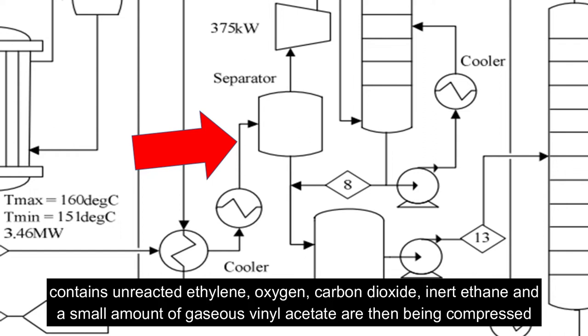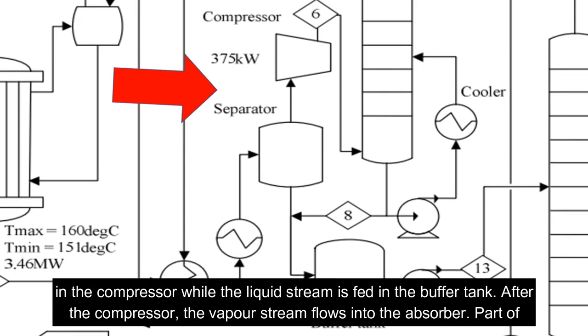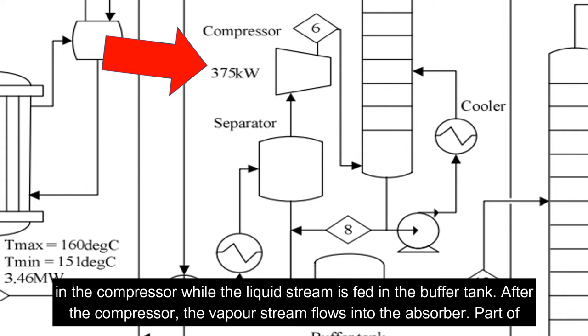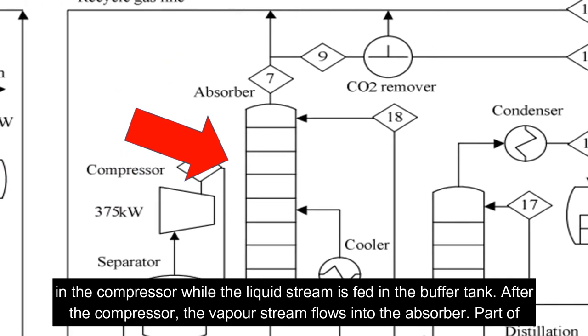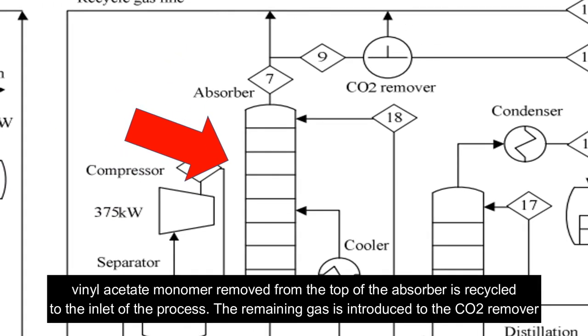While the liquid stream is fed in the buffer tank, after the compressor, the vapor stream flows into the absorber. Part of the vinyl acetate monomer removed from the top of the absorber is recycled to the inlet of the process.